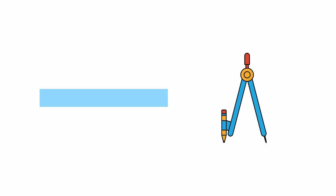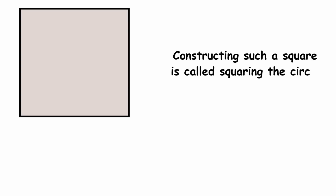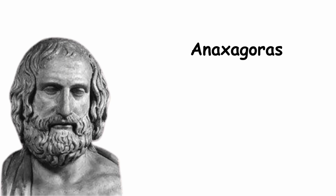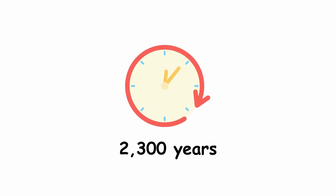Now suppose that you already have a circle drawn on the paper. With only straightedge and compass, can you draw a square enclosing the same area as the circle? Constructing such a square is called squaring the circle, first considered by Greek philosopher Anaxagoras, who lived in the 5th century BC. Solutions evaded mathematicians for 2,300 years.